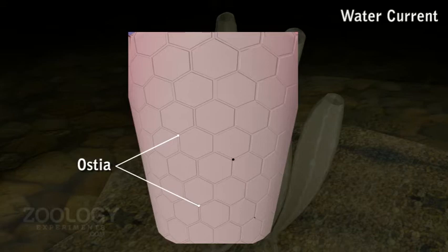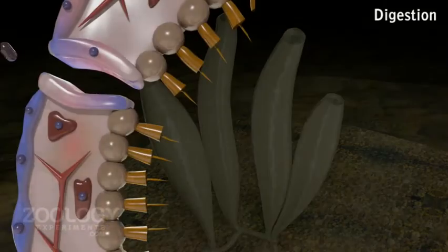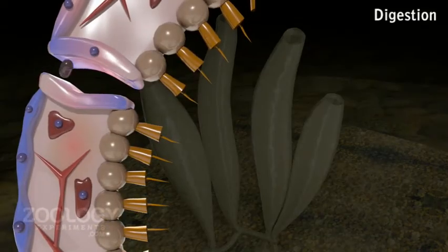Flow of water is controlled by the closing and opening of ostia. The water current brings food and oxygen and removes excretory as well as reproductive elements.